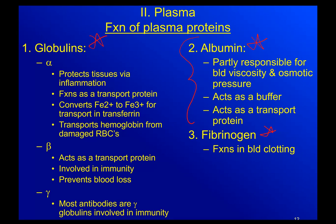Albumin is partly responsible for the blood's viscosity — its thickness. It's also partially responsible for osmotic pressure, so it influences water movement. It can act as a buffer to help maintain blood pH. And importantly, albumin acts as a transport protein — remember in the last unit we talked about lipid-soluble hormones needing to be carried within a transport protein; albumin serves that role.